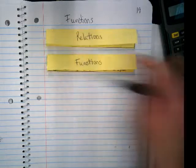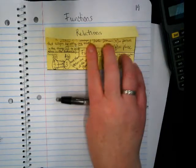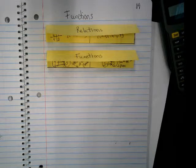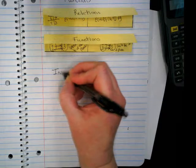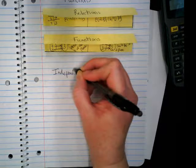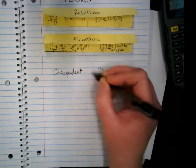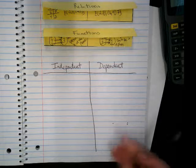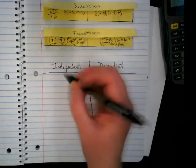We've got our title functions on page 19. You can flip this open and read about relations and functions. Underneath that we're going to make the table that I have above the board on the left side. We're going to title one side independent and dependent.